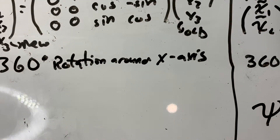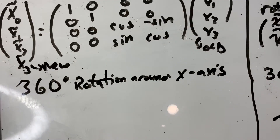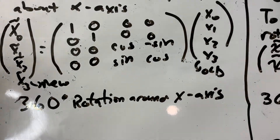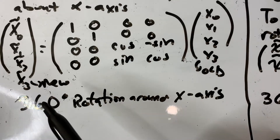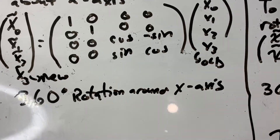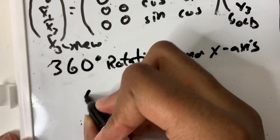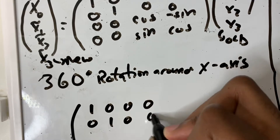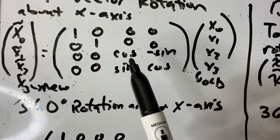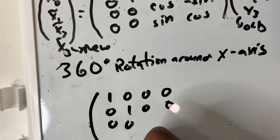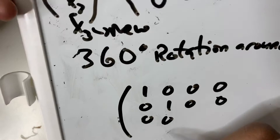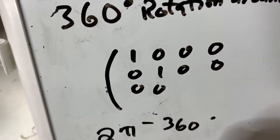Let's actually rotate some things here — let's spin some things. Let's find out what the rotation matrix is going to be for a 360-degree rotation around the x-axis. So we have 1, 0, 0, 0 along the top row, then 0, 1, 0, 0 for the next. Now we need cosine of 2π. Remember that 2π corresponds to a 360-degree rotation.